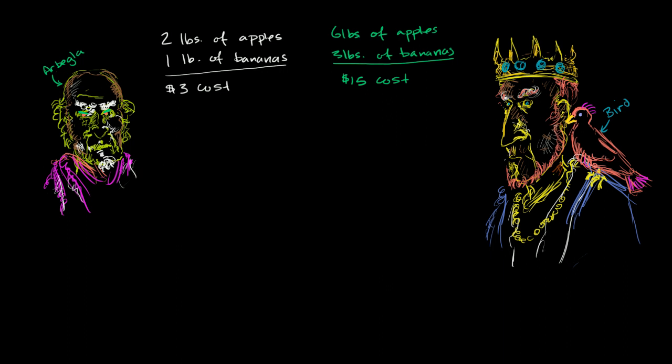So you look at the bird. The bird looks at you. The bird whispers into the king's ear. And the king says, well, the bird says, well, just start defining some variables here so we can express this thing algebraically. So you go about doing that. What we want to figure out is the cost of apples and the cost of bananas per pound. So we set some variables.